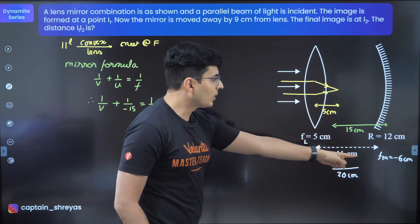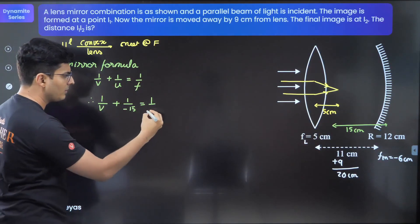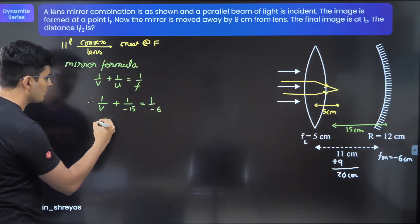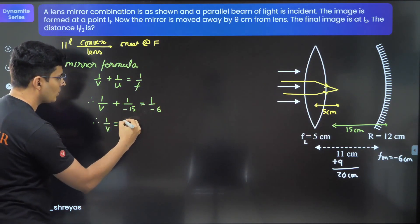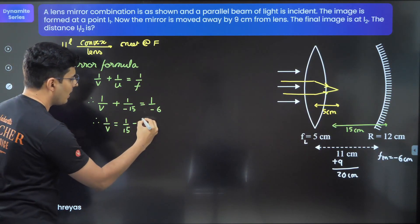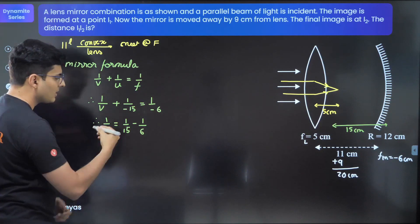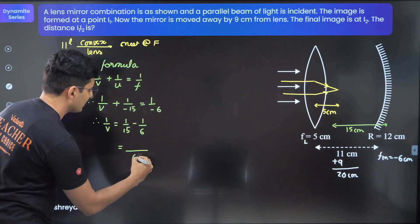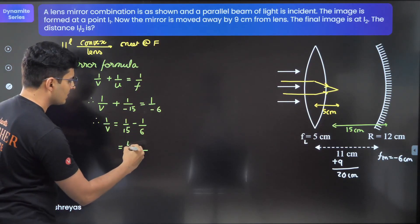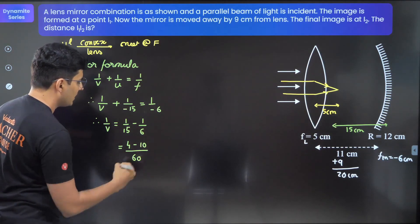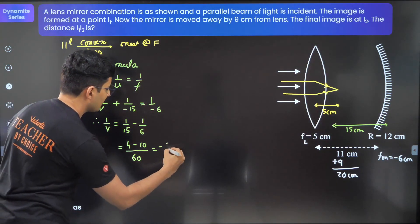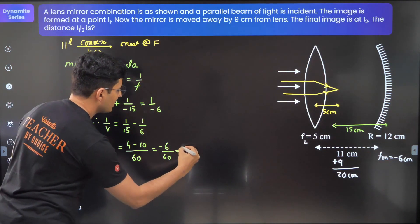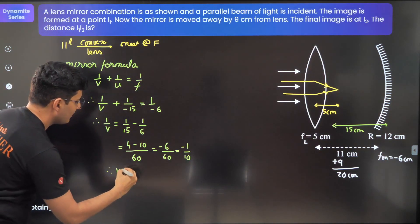The focal length is minus 6. Therefore, 1/v will be equal to 1/f minus 1/u, which is minus 1/6 minus 1/(-15). Taking the LCM of 60: 15 goes 4 times, 6 goes 10 times. That's minus 6 divided by 60, which is minus 1/10.